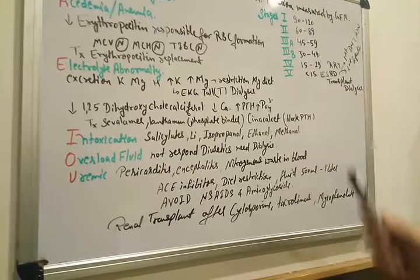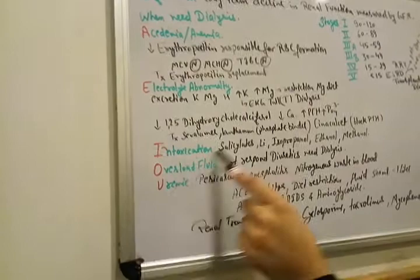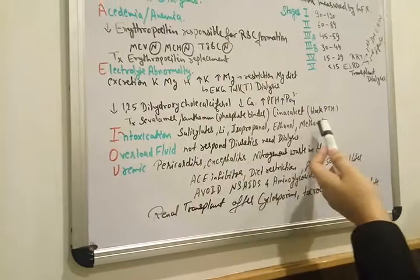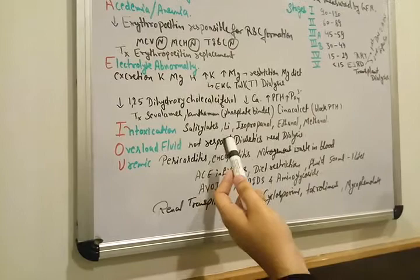And there is some intoxication. I represent here intoxication like salicylates, lithium, isopropanol, ethanol, and methanol. They can cause intoxication and renal failure chronic. When there is chronic alcohol, kidney goes down. GFR decreases due to intoxication.